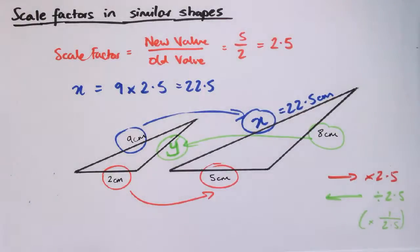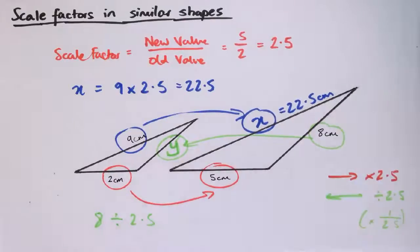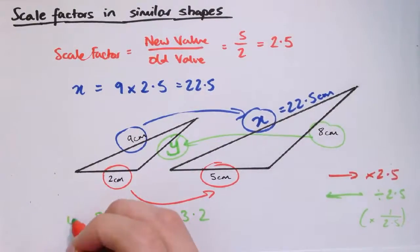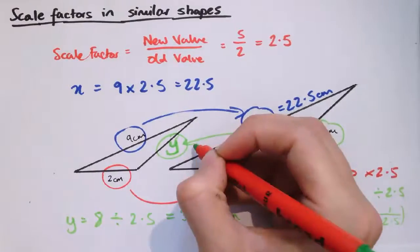So we would do eight centimetres divided by 2.5, which would give us 3.2 centimetres for y.